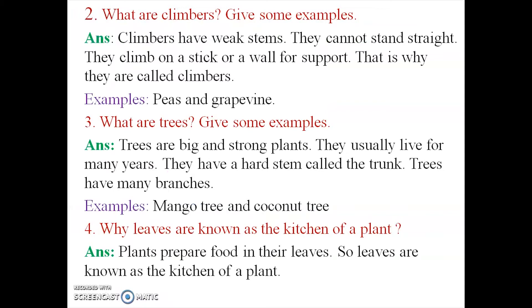Second question — What are climbers? Give some examples. Answer: Climbers have weak stems. They cannot stand straight. They climb on a stick or a wall for support. That is why they are called climbers. Examples: beans, grapes, bitter gourd and snake gourd.